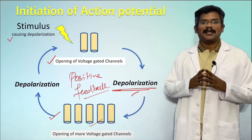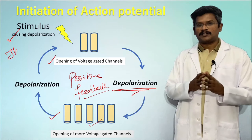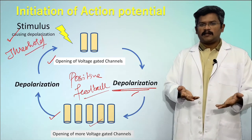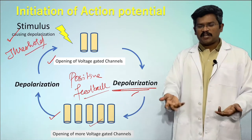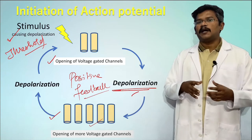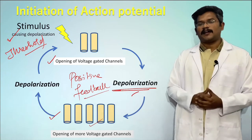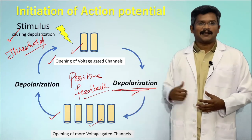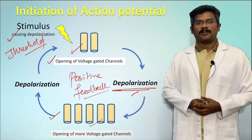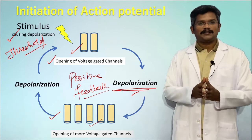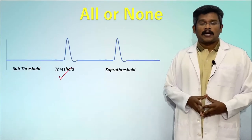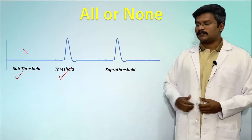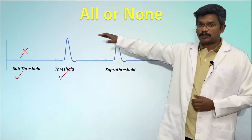The stimulus which can elicit an action potential is called a threshold stimulus — any change that opens an adequate number of ion channels, induces the positive feedback cycle, and generates an action potential. A stimulus which cannot generate an action potential is called a subthreshold stimulus.